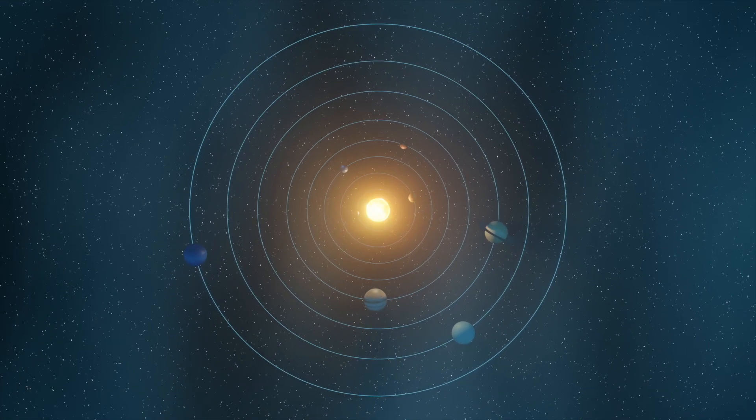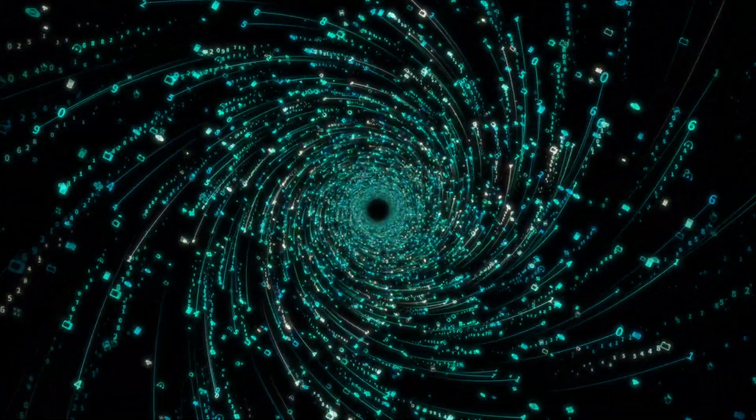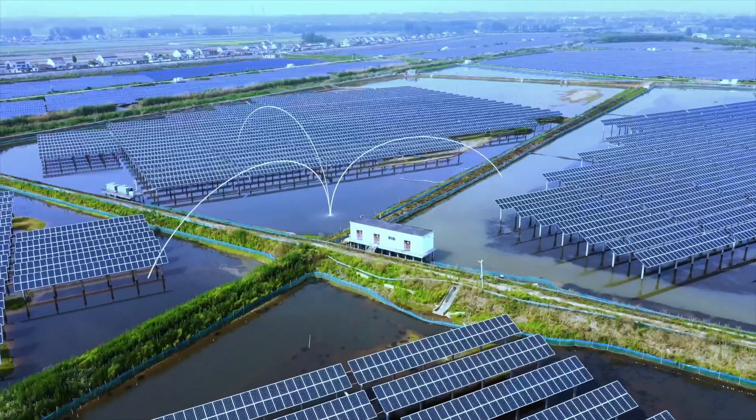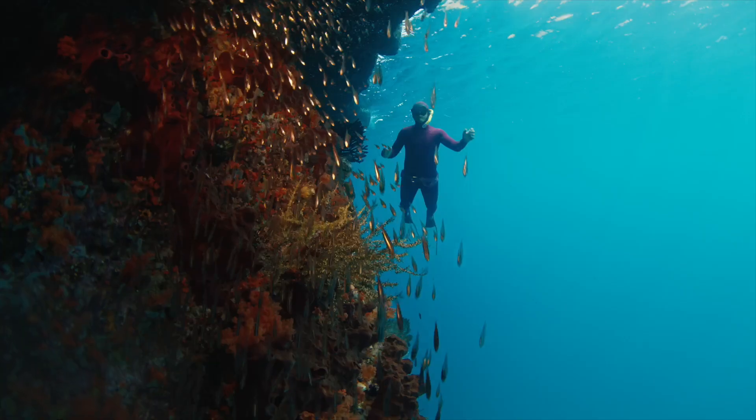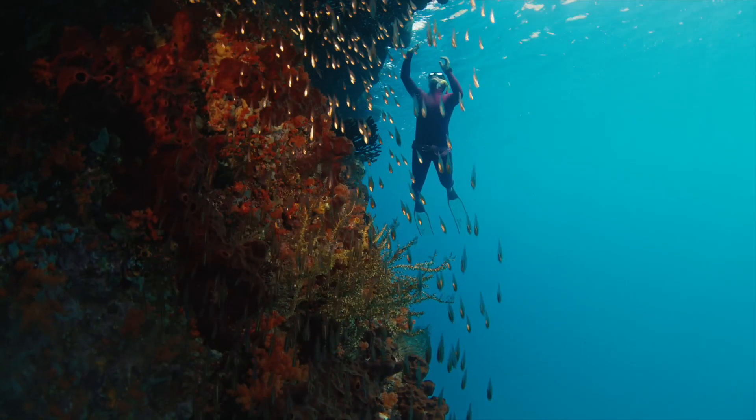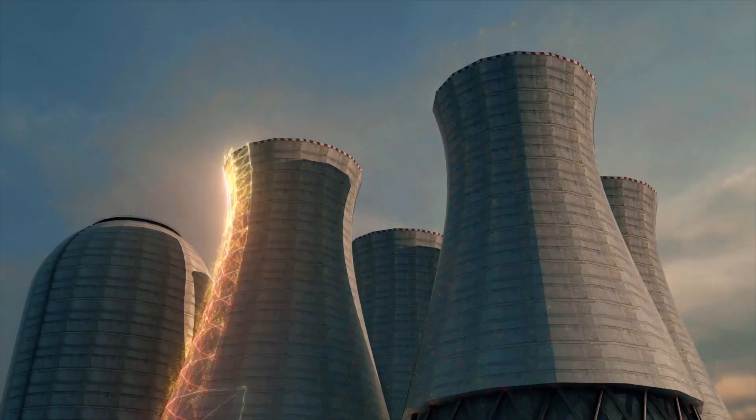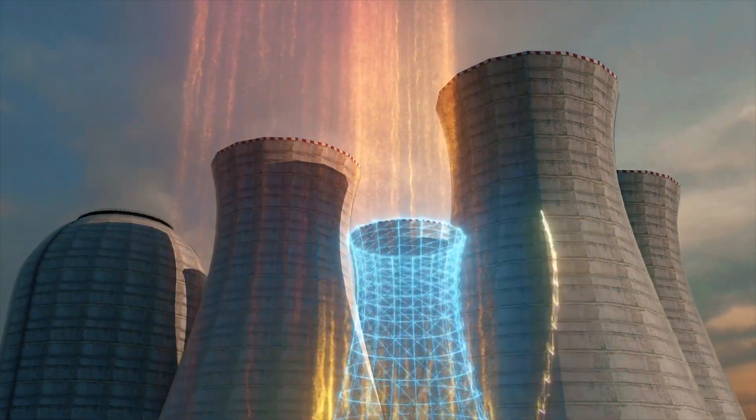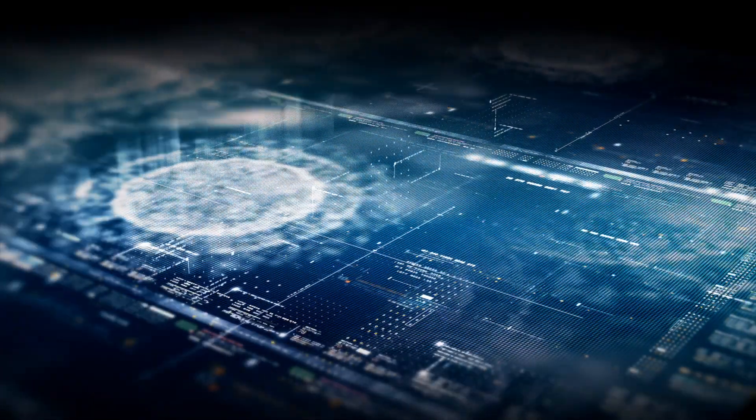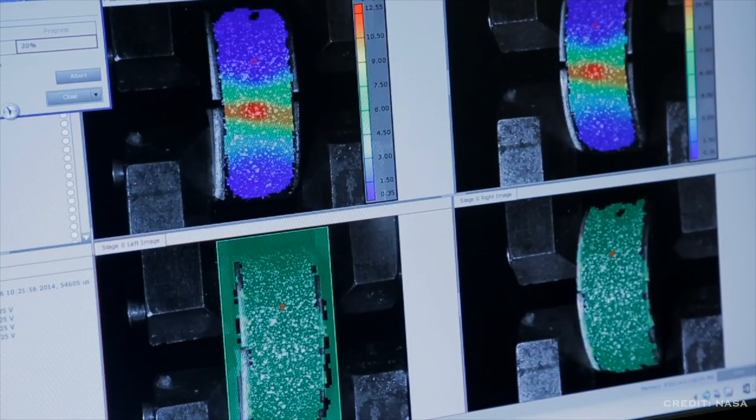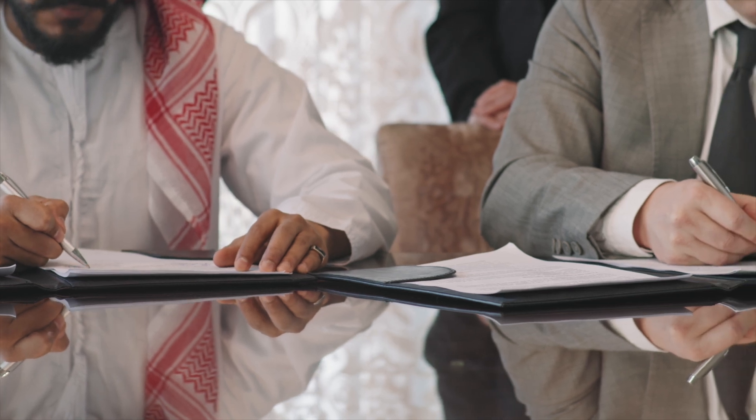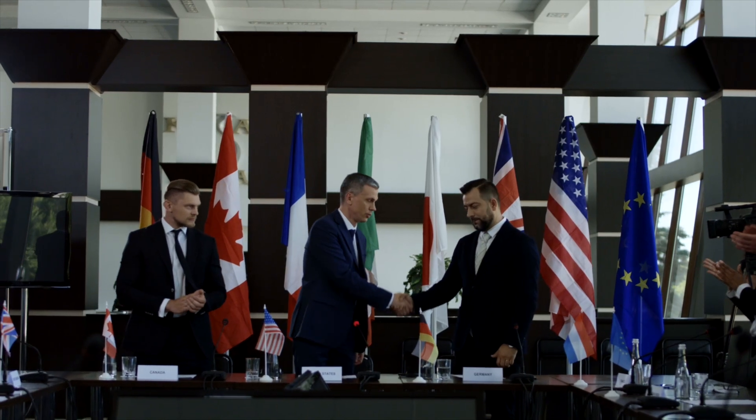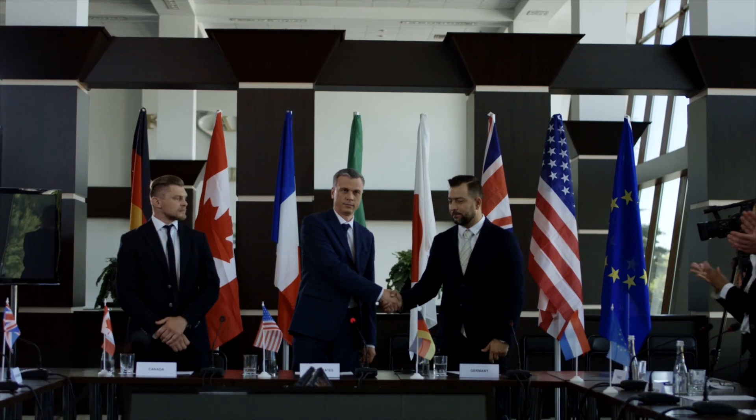The year is 2050, and our solar system is transformed. Nanobot-built habitats dot the surfaces of Mars and the Moon. Asteroid mining operations fuel a new era of abundance on Earth. Probes, enhanced with nanotech, explore the outer reaches of our cosmic neighborhood, sending back data that reshapes our understanding of the universe. Yet the shadow of potential catastrophe looms large. International treaties now govern the use of nanotechnology in space. But enforcement across the vast expanses between worlds proves challenging. Every new mission carries with it both promise and peril.